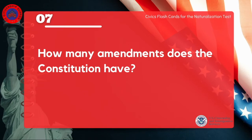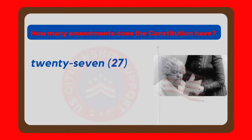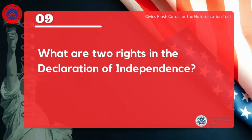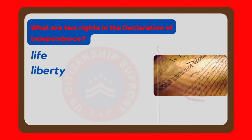How many amendments does the Constitution have? 27. What are two rights in the Declaration of Independence? Life, liberty.